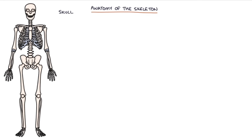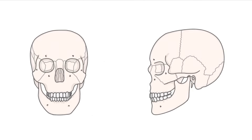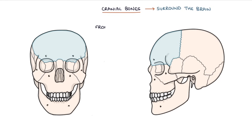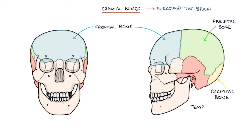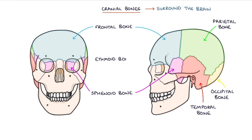Let's start by looking at the skull. The skull consists of the bones of the head. The cranial bones surround the brain. At the front is the frontal bone, at the top is the parietal bone, and at the back is the occipital bone. Beside the ear is the temporal bone. Anterior to the temporal bone is the sphenoid bone. The final cranial bone, which is a bit more difficult to visualize, is the ethmoid bone, which is closer to the midline, posterior to the nose, and inferior to the frontal bone.